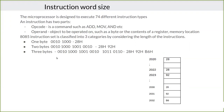A three-byte instruction consists of 24 bits: here one eight-bit, here another eight-bit, and here another eight bits — so three bytes. This can also be represented in hex. A one-byte instruction needs only one memory location, because in the 8085, each memory location stores eight bits of data.